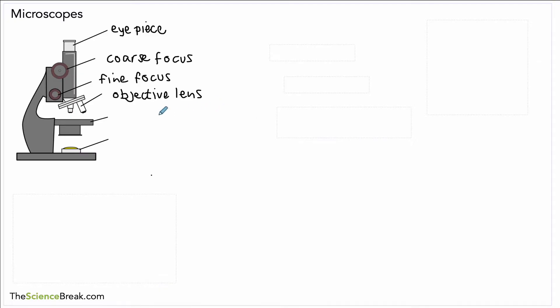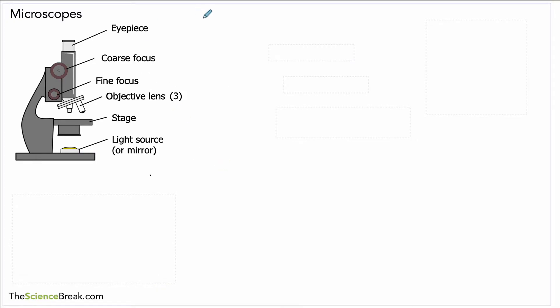We often have two or three objective lenses, usually we can see three on there. Below that is the stage - that is the place where we put our slide with the thing we're looking at. Right at the bottom there's usually a light source to provide light, and sometimes that can be a mirror that will reflect light up through the microscope.